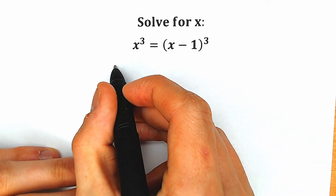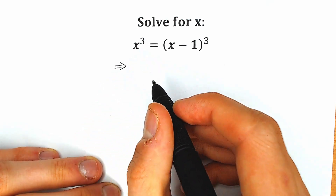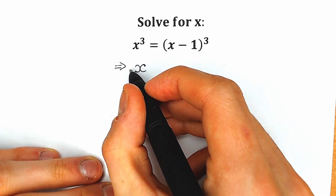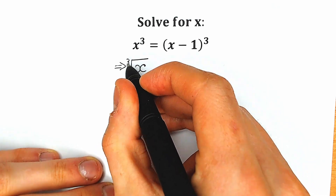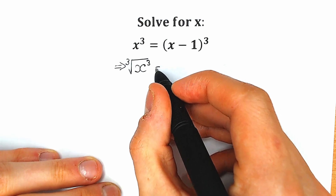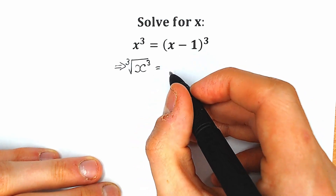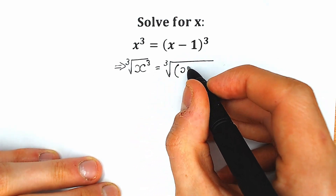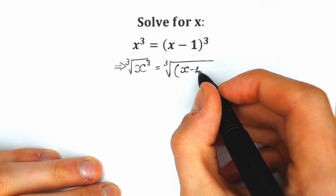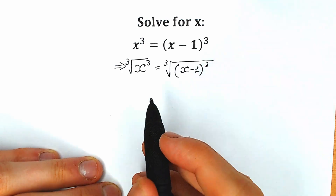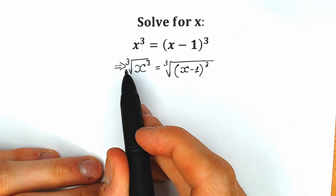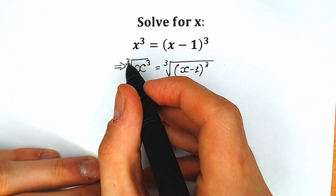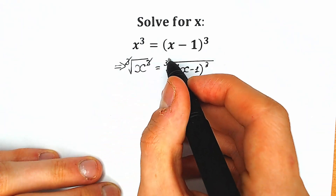A lot of students might say: okay, we have the third power on both sides, so maybe we can apply the third root of x to the third power. And on the right side we can do the same thing — apply the third root of x minus 1 to the third power. So we apply the cube root on the left side and cube root on the right side.